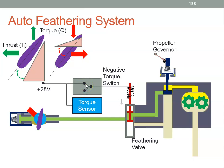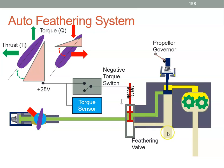When it closes the switch, we have an electrical system. Power is applied to a solenoid, the solenoid moves the feathering valve, and that allows the oil to flow from the hub back to the engine. When that happens, the feathering spring can push the propeller back to the feathered position.